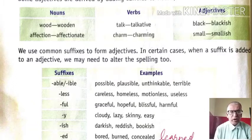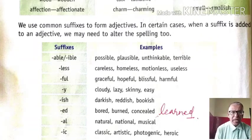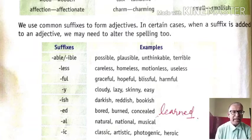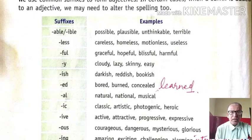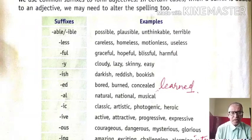Some suffixes: -able or -ible — possible, plausible, unthinkable, terrible. -less — careless, homeless, motionless, useless. -ful — graceful, hopeful, blissful, harmful. -y — cloudy, lazy, skinny, easy. -ish — darkish, reddish, bookish. -ed — bored, burned, concealed, learned.